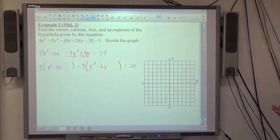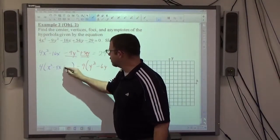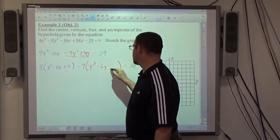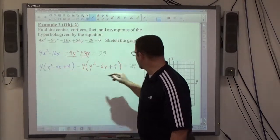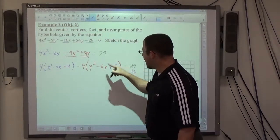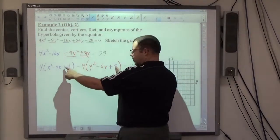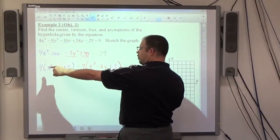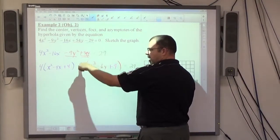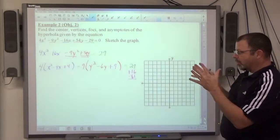Now, the complete the square step is what it was before. I'm going to take half of 4 and square it, that makes plus 4. I'm going to take half of 6 and square it, that makes plus 9. But in reality, I added 4 times 4, which is 16. And I added negative 9 times 9, which is negative 81. So be careful that it's always pluses when you're squaring this thing, right? But then this number times that number is what we truly added to that side.